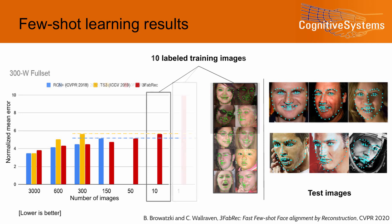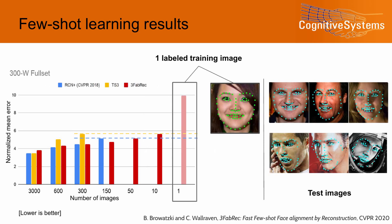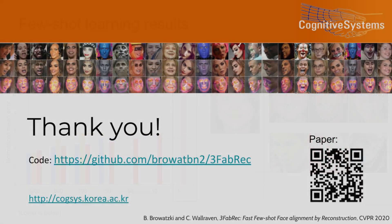Only when we drop down to a single annotated training image do errors become larger. Yet we still see how information from this one face is transferred to other faces with very different shapes and appearances. More results and figures can be found in our paper and supplementary materials. Source code and trained models are available on GitHub. Thank you for watching.